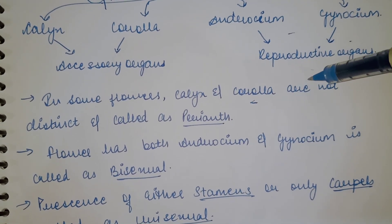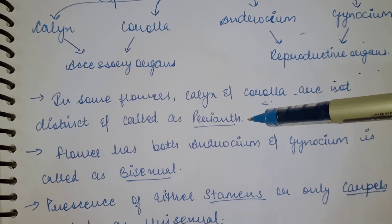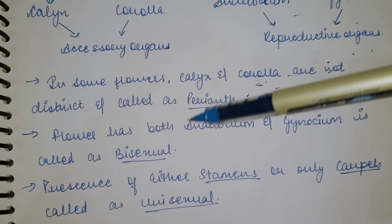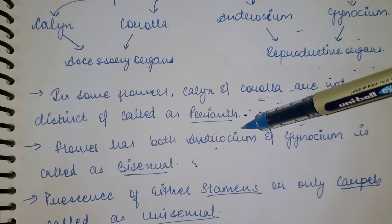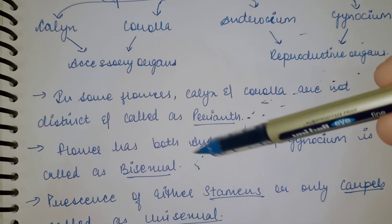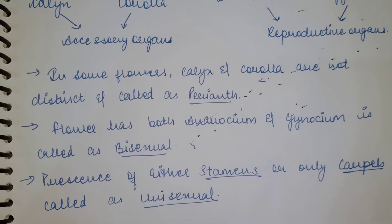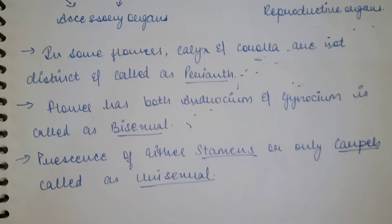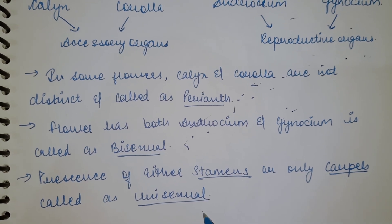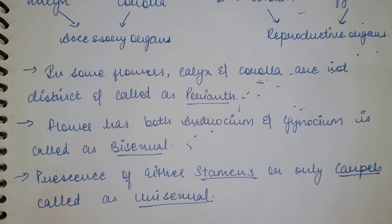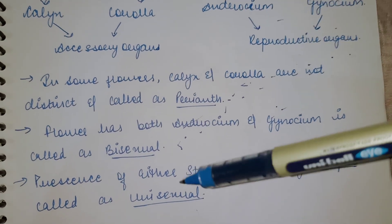Calyx and Corolla are the accessory organs, while Androecium and Gynoecium are the reproductive organs. In some flowers, Calyx and Corolla are not distinct — they are similar to each other — and in that case we call them Perianth. If both Androecium and Gynoecium are present in a flower, it is called a bisexual flower. If only stamens or only carpels are present, that flower is known as a unisexual flower.